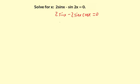Pretty straightforward from here. I'm going to factor out the 2 sine of x. That's going to leave 1 minus cosine of x equals 0.